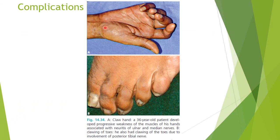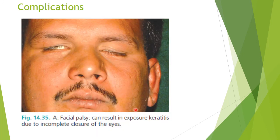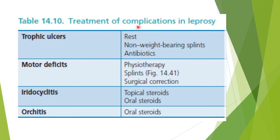Complications of leprosy include claw hand — due to ulnar and median nerve neuritis — clawing of toes due to posterior tibial nerve involvement, trophic ulcers (well-defined punched-out ulcers with hyperkeratotic margins, painless, occurring on pressure points), resorption of digits over time, and facial palsy resulting in exposure keratitis. Management: for trophic ulcers — rest, non-weight-bearing splints, and antibiotics; for motor deficits — physiotherapy, splints, and surgical correction; for iridocyclitis — topical and oral steroids.